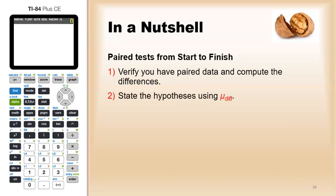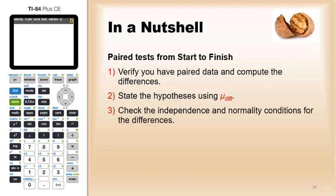We'll state the hypotheses using mu diff or the differences of the paired means, so either the paired means are equal to zero or the average of the paired means is not equal to zero.